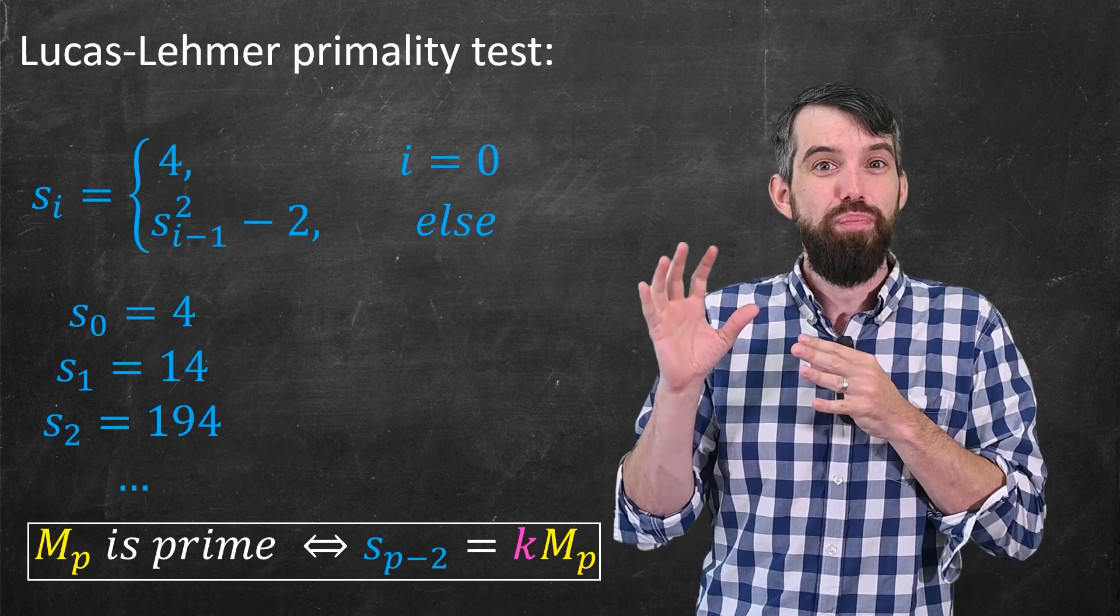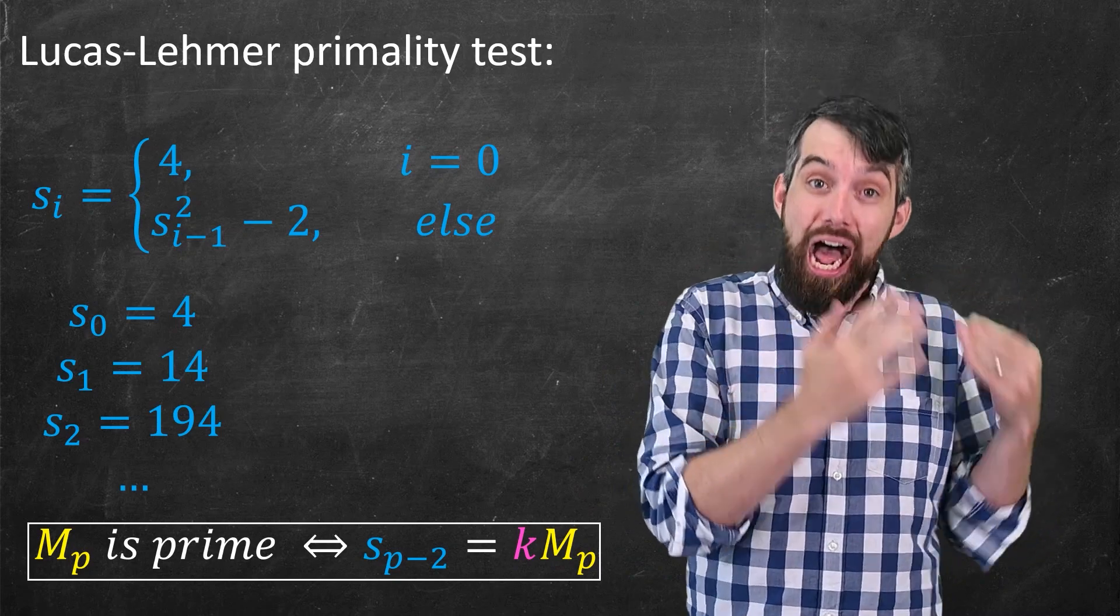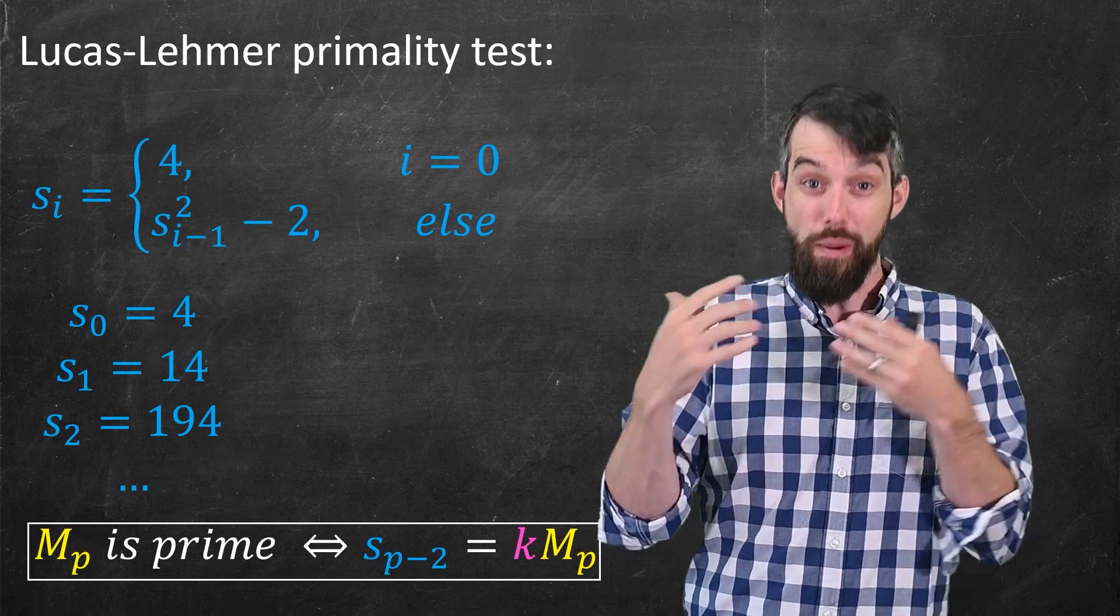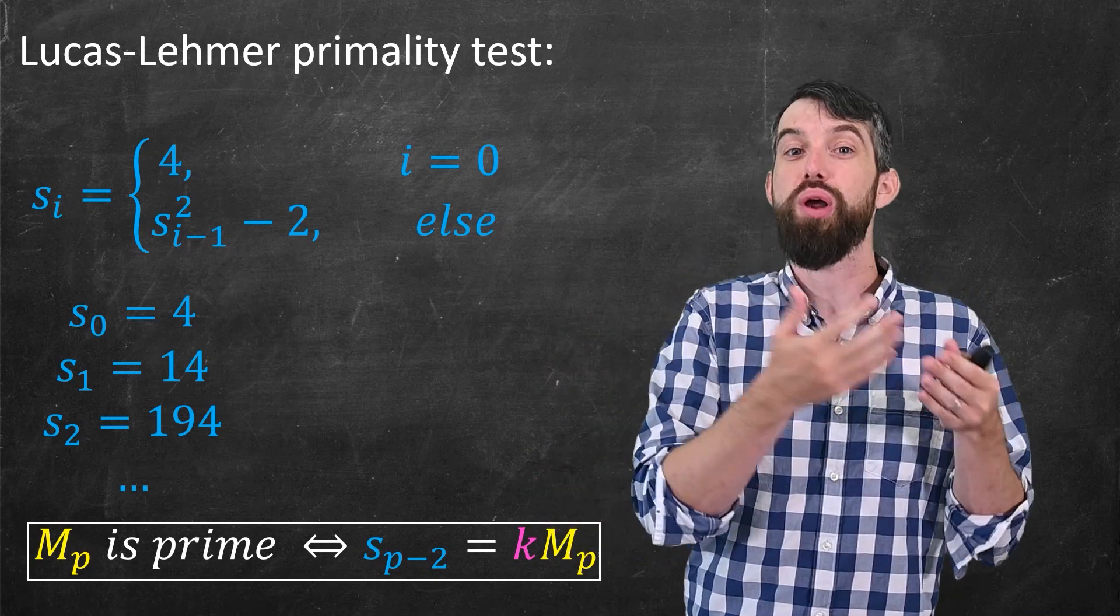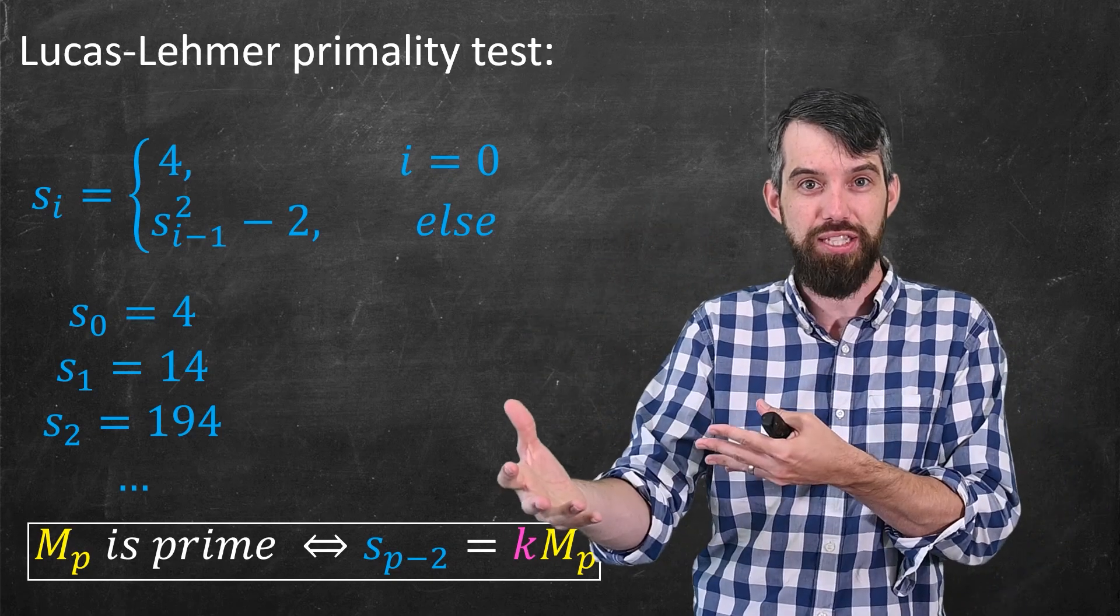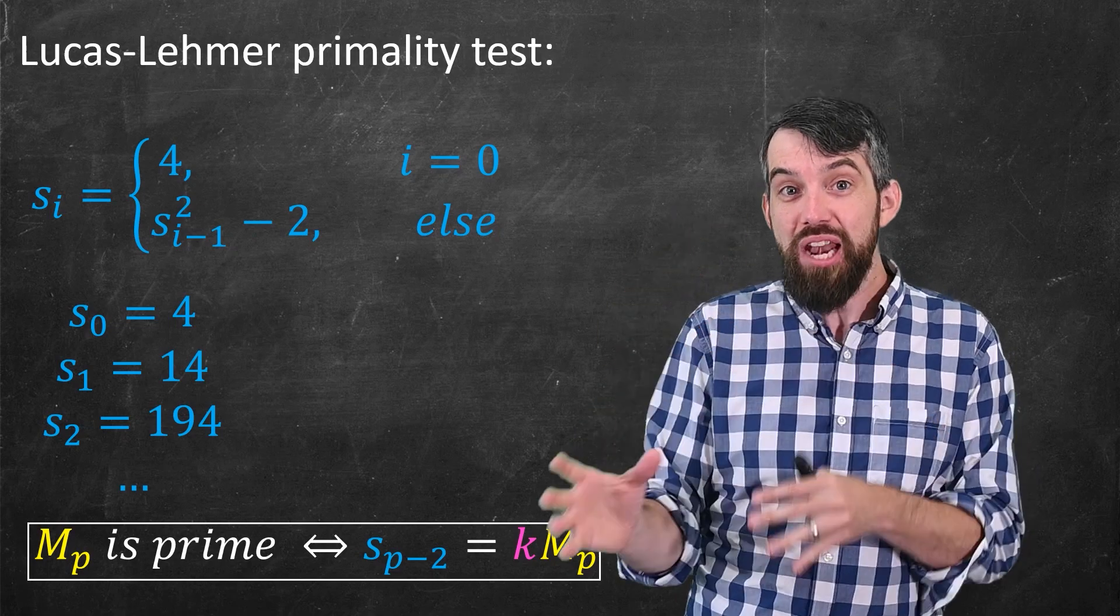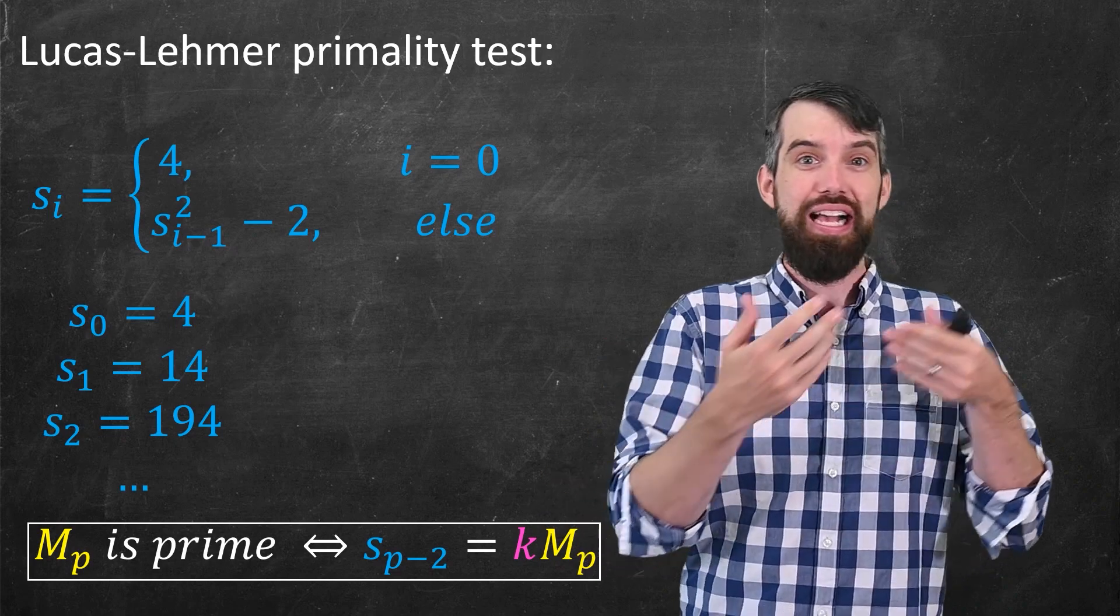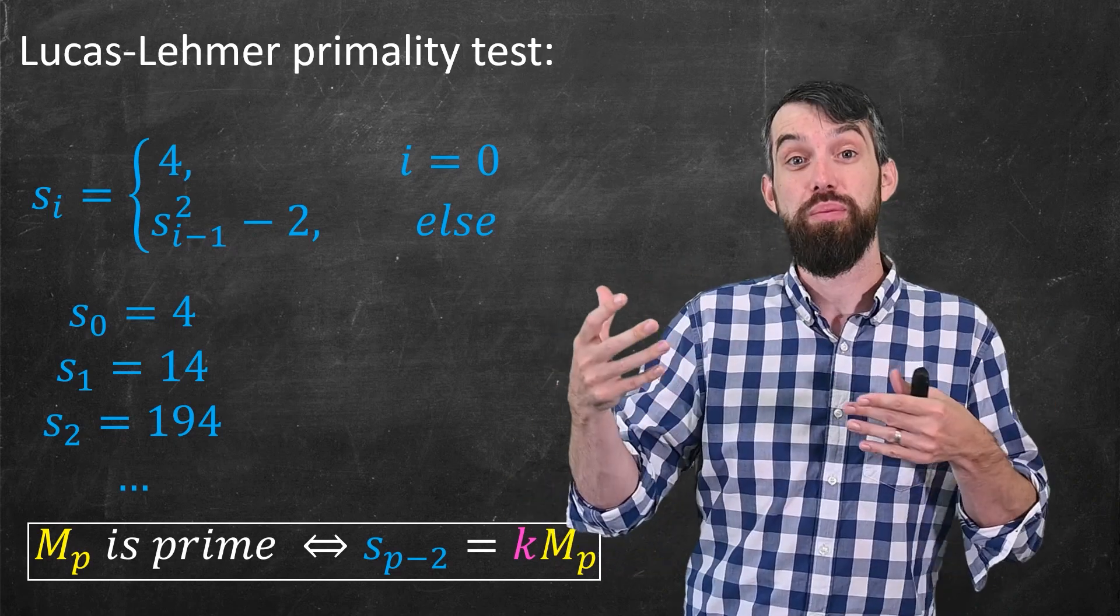So this is by no means a cheap computation, but it is cheaper than the other methods. And that's what makes it so powerful. It is cheaper computationally speaking to verify whether a Mersenne number is prime or composite than it is a generic number of roughly the same size. And it's for this reason that searching for Mersenne primes is an excellent way to find extremely large prime numbers, and indeed why seven of the last prime numbers that we've discovered have all been Mersenne primes.